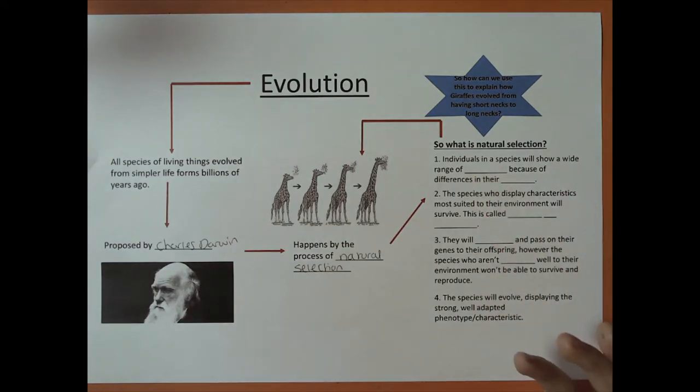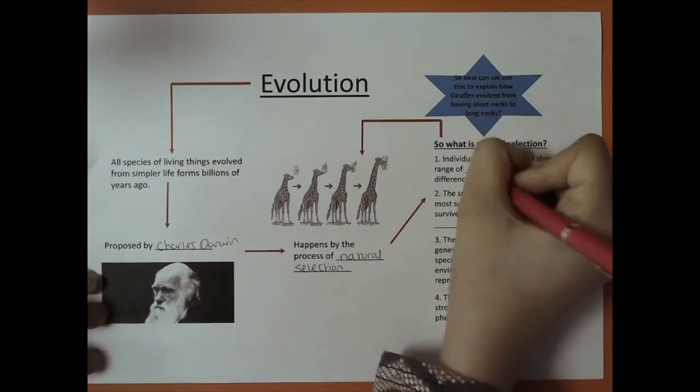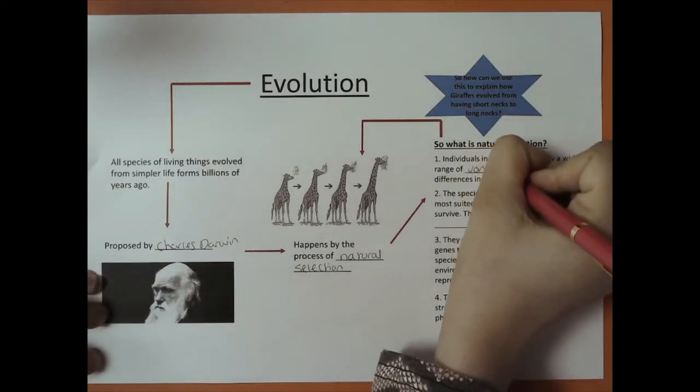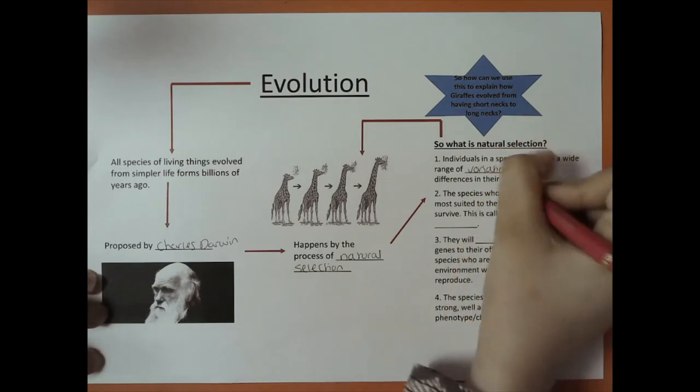So what is natural selection? Well, there are a few key steps that we must remember. First, individuals in a species will show a wide range of variation because of differences in their genes.